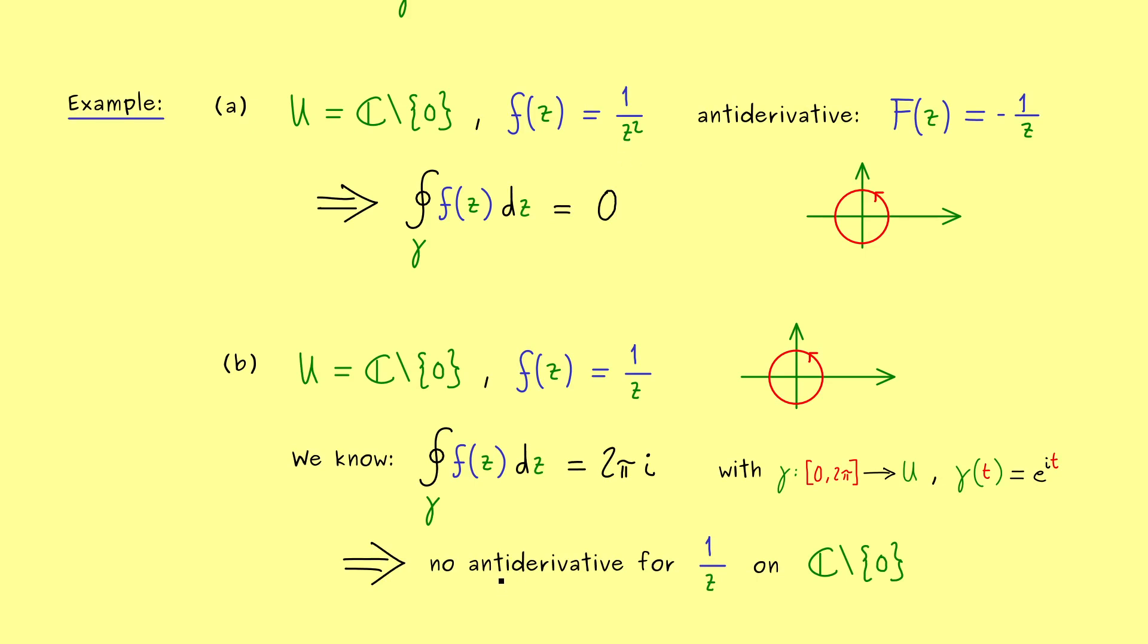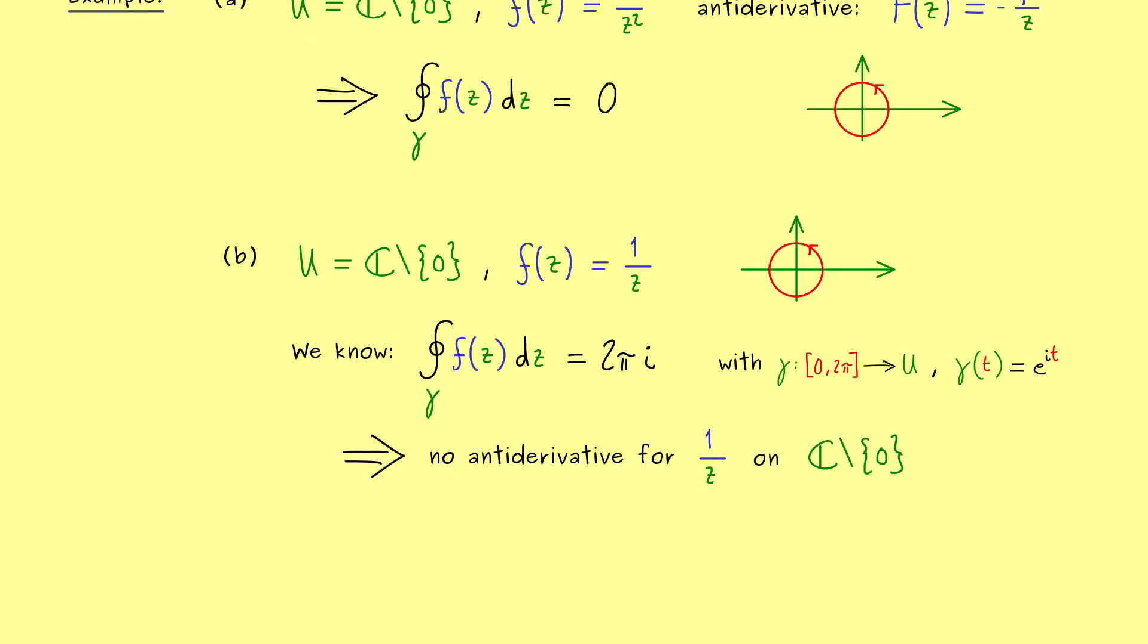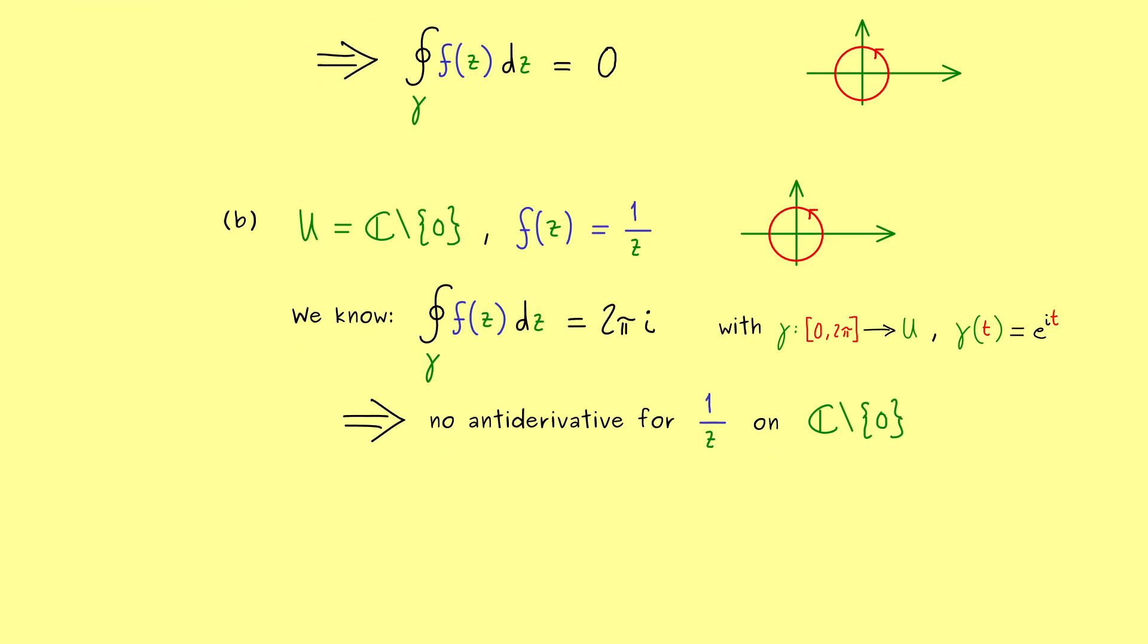So you see this function here acts completely different than the similar looking function 1 over z squared. However at this point you can ask the question: Is the logarithm we have defined not an antiderivative of 1 over z? And indeed it seems a little bit strange but the answer for the question is yes the logarithm is an antiderivative of the function 1 over z.